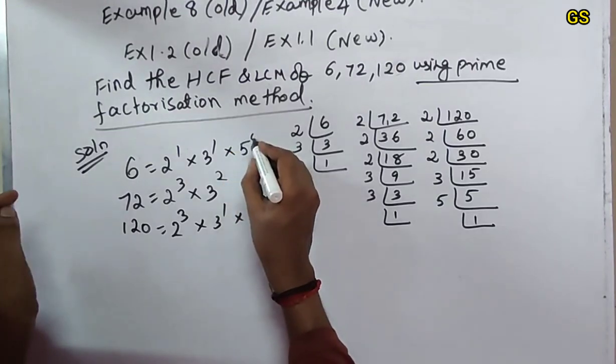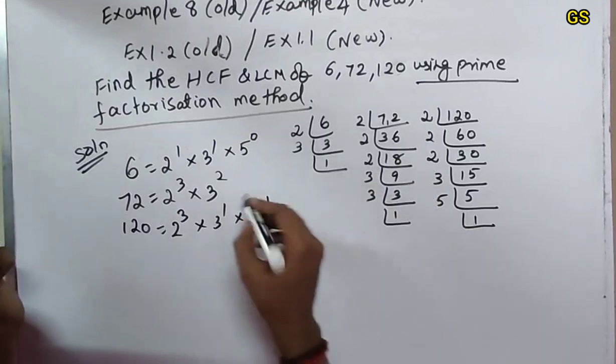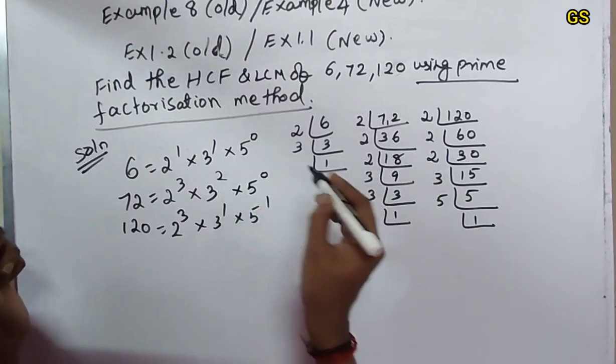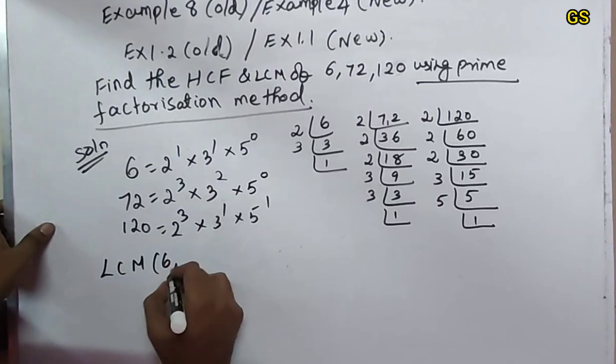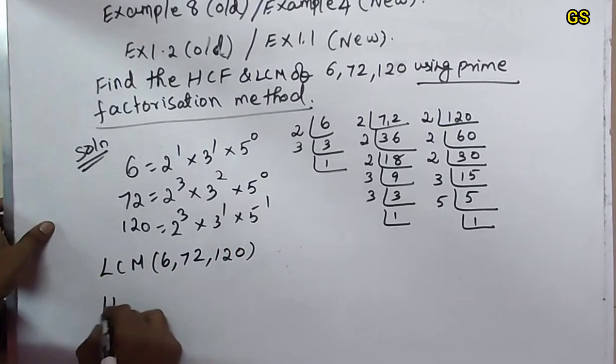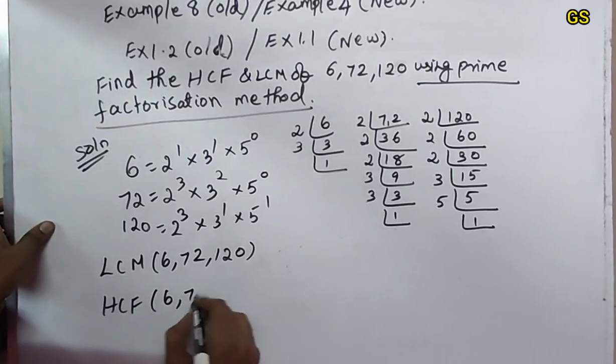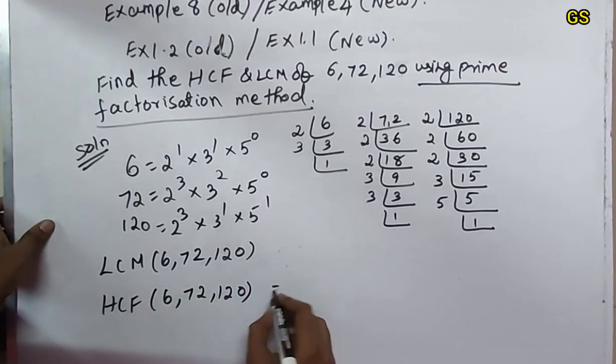5 to the power 0 for the numbers without factor 5. So LCM of 6, 72, 120. Next, HCF of 6, 72, 120.